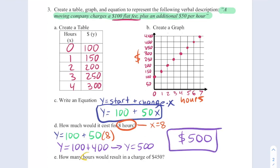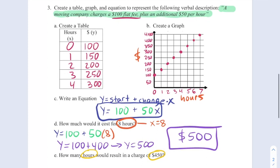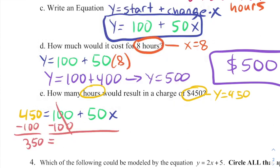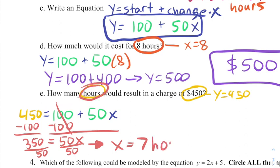Next, they ask us how many hours is an unknown would result in a charge of $450. Well, money is Y, so this is telling us that Y equals 450. So again, we'll take our equation from part C, and this time we'll replace Y with 450. Now we're set up to solve a two-step equation. I'll subtract 100 and then divide by 50 to get an answer of X equals seven. Well, since X is hours, this answer is seven hours.